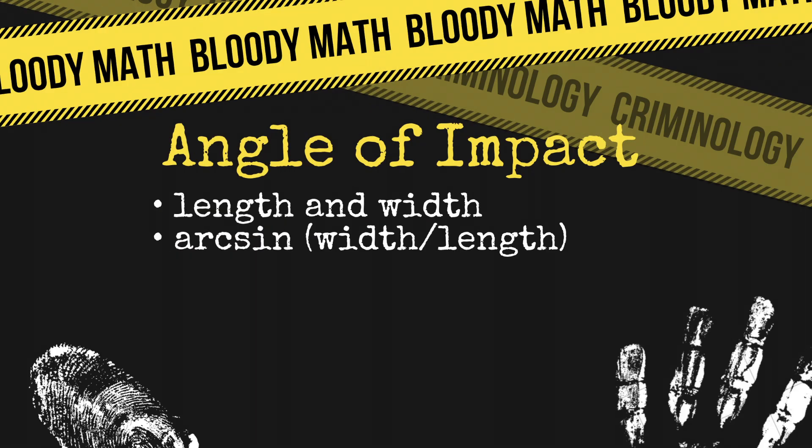To know the angle of impact from where the blood came from, it is important to know the length and the width of the blood stain, using the formula arcsin(width / length) = theta.